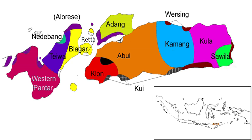Grammar. Blagar is morphologically simple. It has a limited number of pronouns, adverbs, particles, auxiliaries and clitics, but an unrestricted number of verbs and nouns. Verbs can be transitive or intransitive, and nouns can be alienable or inalienable. Nouns are placed before adjectives.